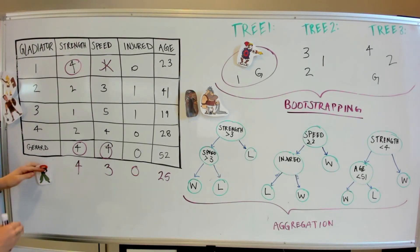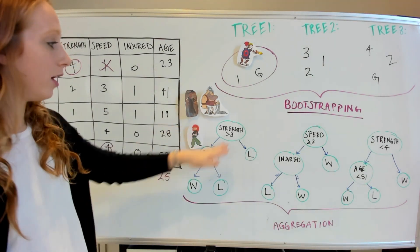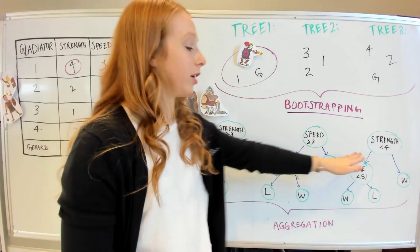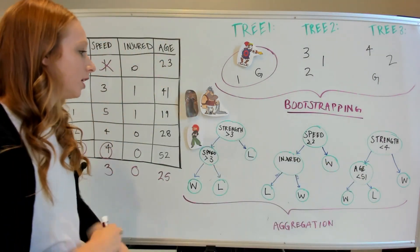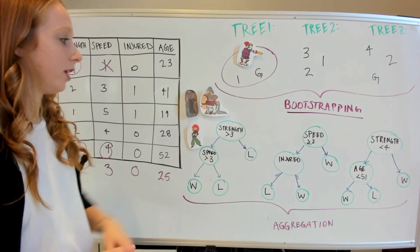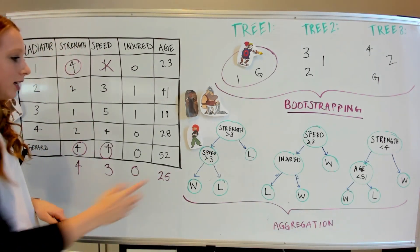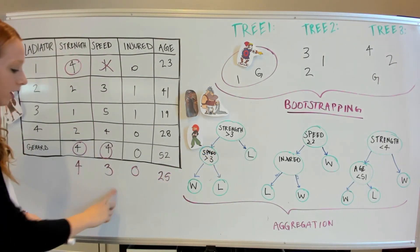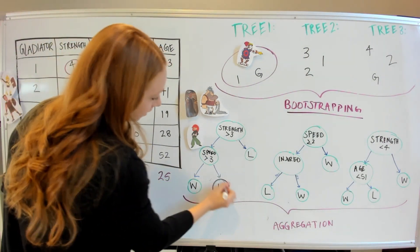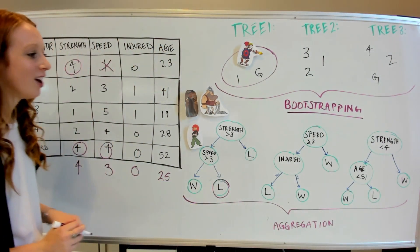Okay. We're going to take this new data point and we're going to evaluate it on each tree that's been created. So again, is the strength greater than 3? Yes. Is the speed greater than 3? No. Well, you can't win them all.